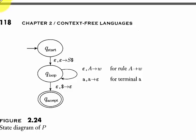As I mentioned earlier, a pushdown automata can be converted to a context-free grammar and vice versa. There are a set of steps to be followed in order to convert them. This video will be talking about converting a context-free grammar to a pushdown automata.